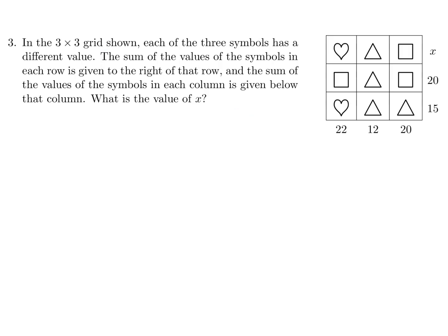In a 3 by 3 grid, each of three symbols has a different value. The sum of the values of the symbols in each row is given to the right of that row, and the sum of the values in each column is given below that column. What is the value of X? Well, we're basically being asked to find the value of heart plus triangle plus square.